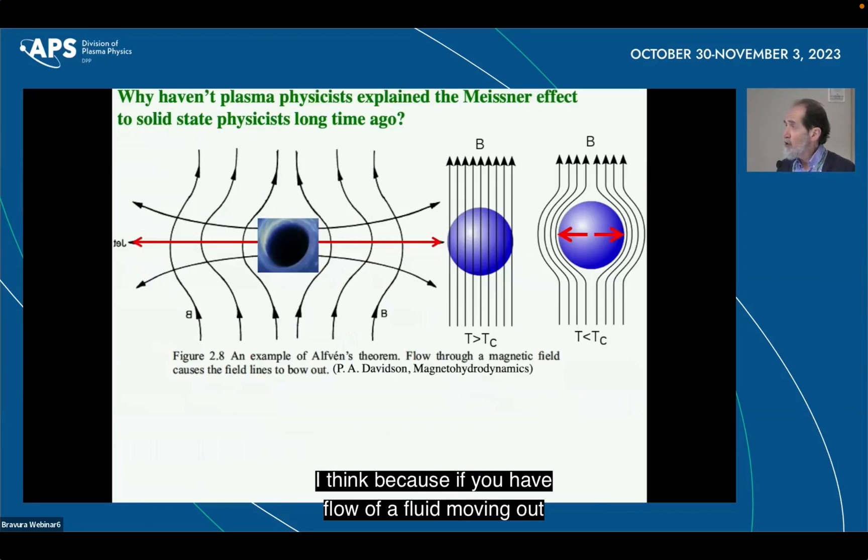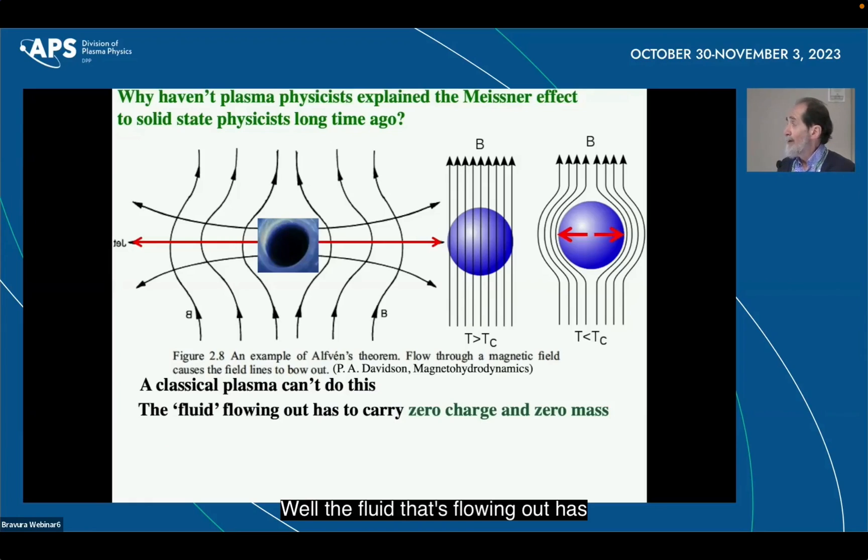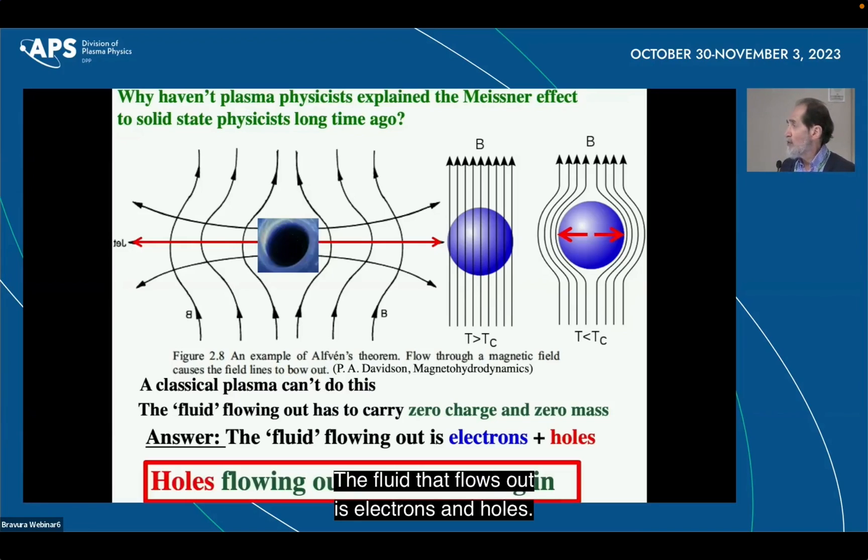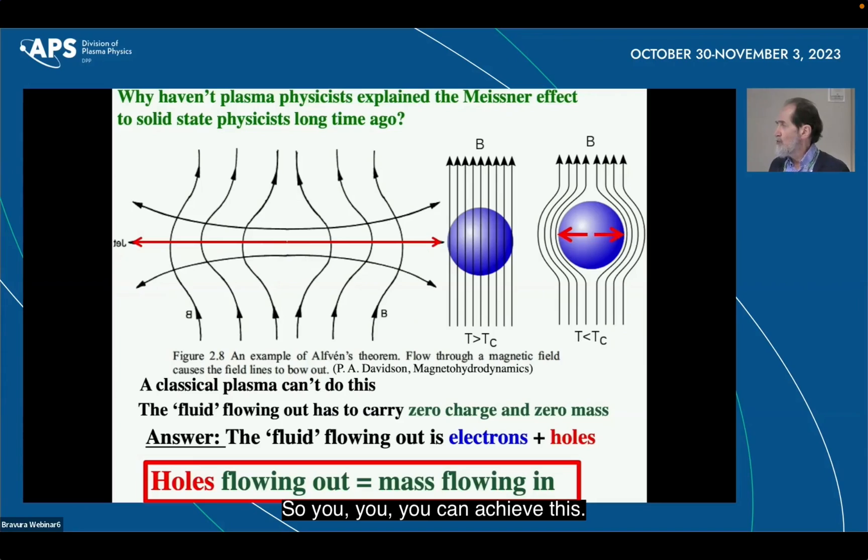Because if you have flow of a fluid moving out and pushing out magnetic field lines, you're going to leave a hole in the center, right? And plasmas don't do this. I mean, you kind of just expel stuff. Well, the fluid that's flowing out has to carry zero charge and zero mass. And how does that happen? Well, let me just tell you the answer and then I'll explain it. The fluid that flows out is electrons and holes. The holes flowing out is the same as mass flowing in. So you can achieve this.